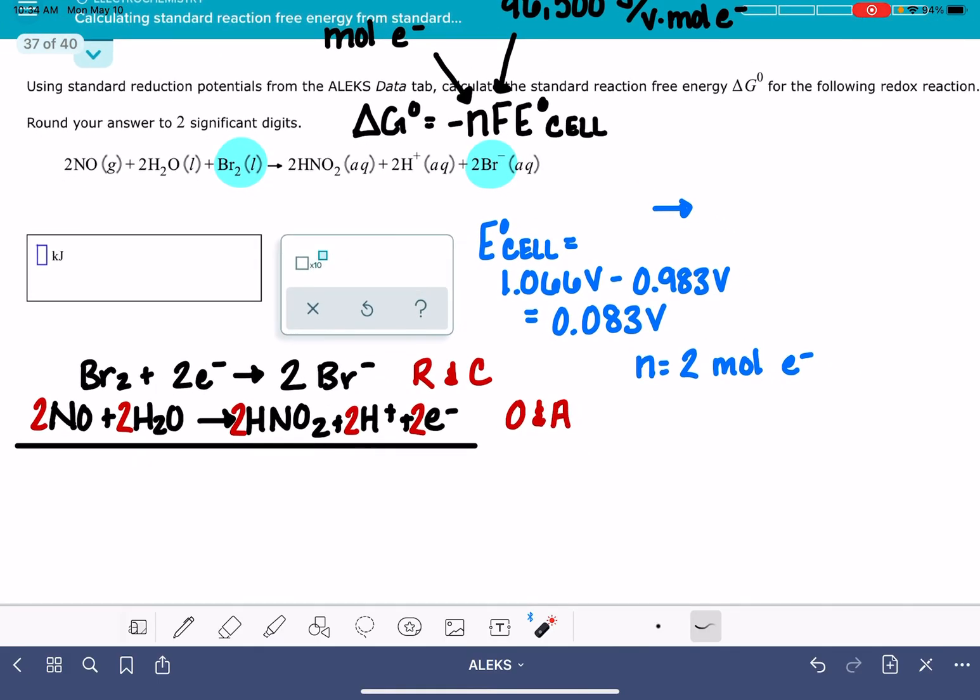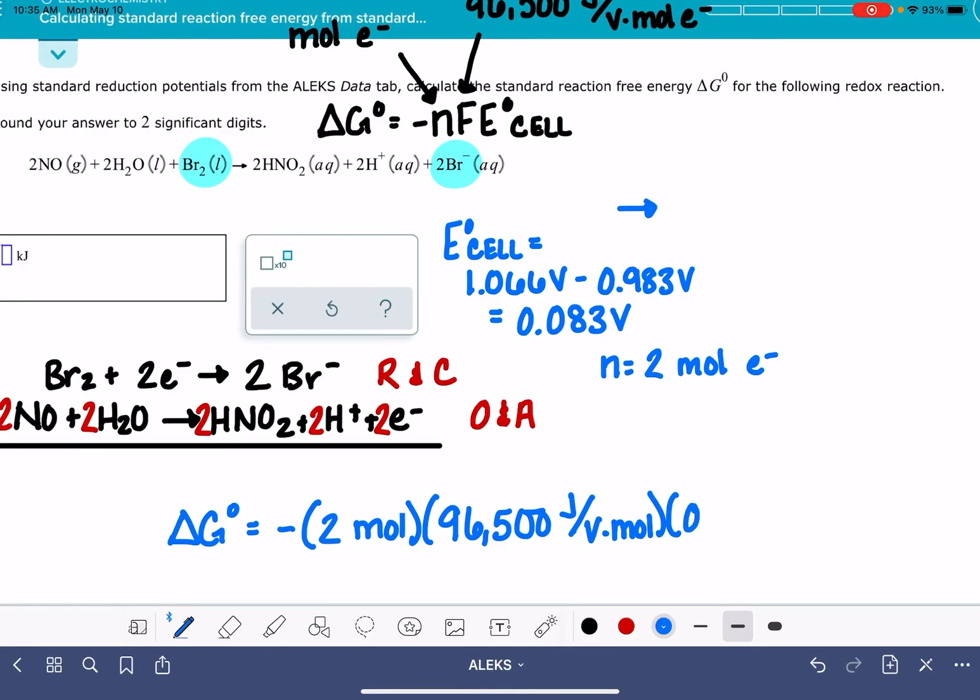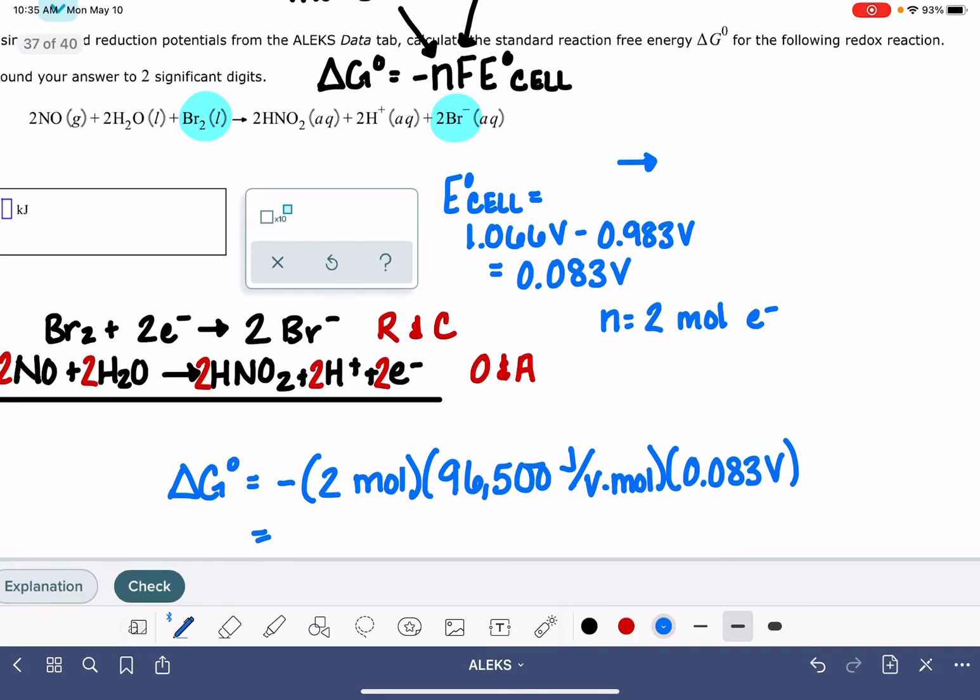So now we have enough information to actually calculate delta G. I'm going to do that in this space down here. Delta G standard is going to be equal to negative n, which is two moles, times Faraday's constant, 96,500 joules per volt per mole. And then the value of E cell, which is 0.083 volts. I'm going to work the math out on this.